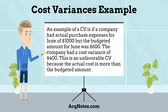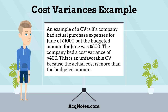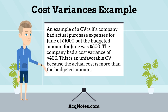An example of a CV: if a company had actual purchase expenses for June of $1,000 but the budgeted amount for June was $600, the company had a cost variance of $400. This is an unfavorable CV because the actual cost is more than the budgeted amount.